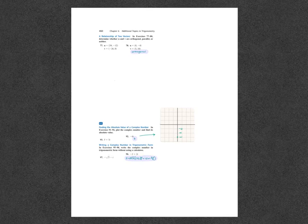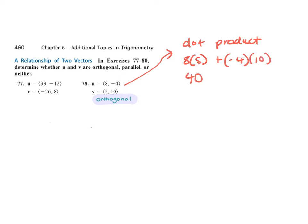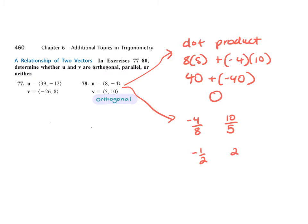For problem 78, remember there are three ways. One thing I could do is find the dot product of these two: 8 times 5 plus negative 4 times 10, giving 40 plus negative 40 — if the dot product is 0, they're orthogonal. Or I could find their slopes: negative 4 over 8 and 10 over 5, which is negative one-half and positive 2 — opposite reciprocals, so also perpendicular. For parallel, you just look at the slopes — they would have to be the same.